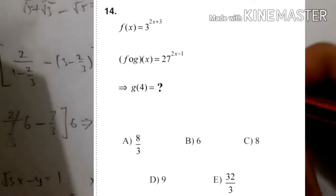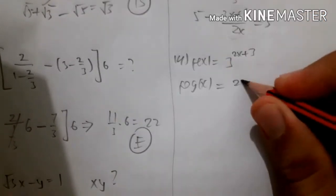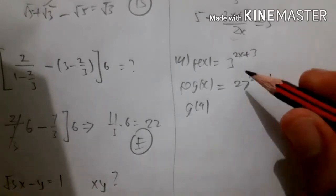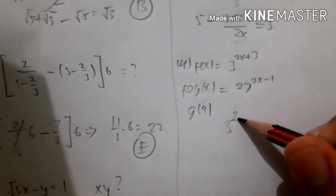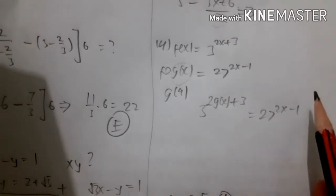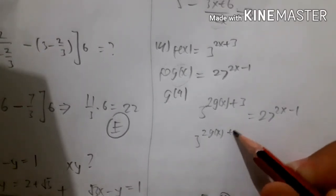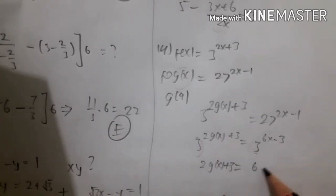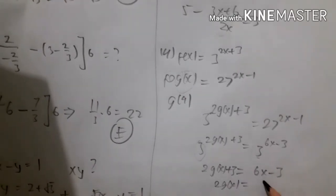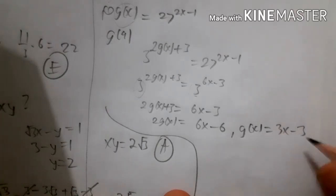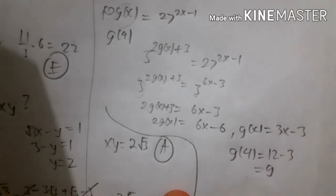For number 14: f(x) equals 3 to the power of 2x plus 3, and the composition f(g(x)) equals 27 to the power of 2x minus 1. Since g(x) is substituted into f(x), we write 3 to the power of 2·g(x) plus 3 equals 27 to the (x minus 1). Knowing 27 equals 3 cubed, the exponents give 2·g(x) equals 6x minus 6, so g(x) equals 3x minus 3. Therefore g(4) equals 12 minus 3, which is 9 — the answer is D.